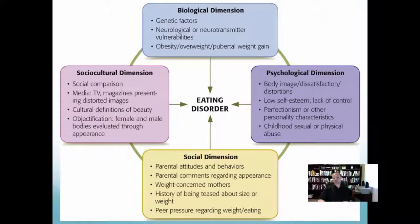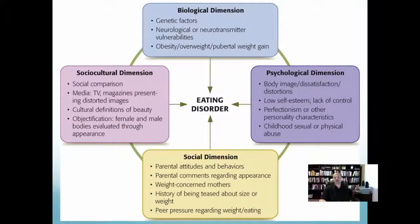Social dimensions include parents with higher levels of depression — their children tend to have higher levels of bulimia. Parental attitudes and behavior matter: if a parent models that you must be thin, children may internalize the thinking error that they're unworthy if not thin. Parental comments about weight, even minor ones, can contribute to eating disorders. Mothers modeling weight concern also plays a role, as does a history of being teased about size or weight and peer pressure regarding eating.